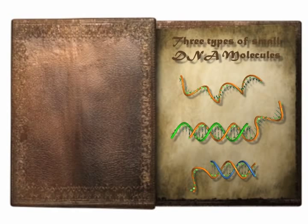DNA is an excellent computing substrate for molecular programming. It has natural interfaces with biological environments. It can be chemically synthesized with any desired sequence. It provides a combinatorial design space with a four-letter code using A's, T's, C's, and G's. And it has predictable behavior with Watson-Crick base pairing.